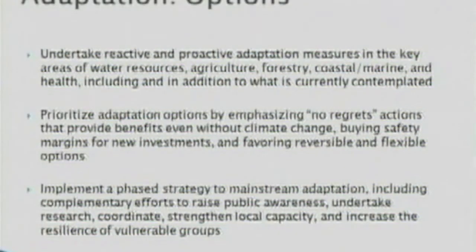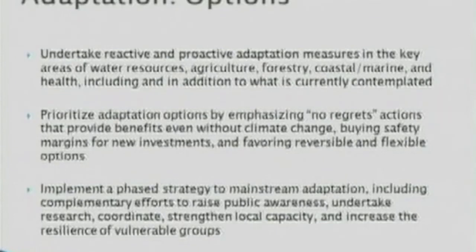Adaptation options identified by the CEA include undertaking reactive and proactive adaptation measures in the key areas of water resources, agriculture, forestry, coastal, marine, and health — including and in addition to what is currently contemplated. The CEA recommends prioritizing adaptation options by emphasizing no-regrets actions that provide benefits even without climate change, and implementing a phased strategy to mainstream adaptation, including complementary efforts to raise public awareness.